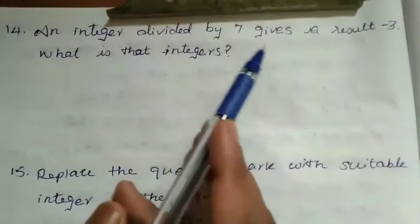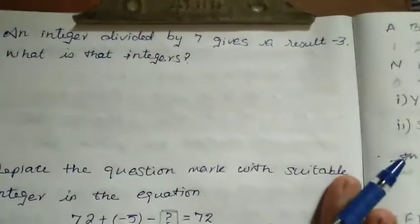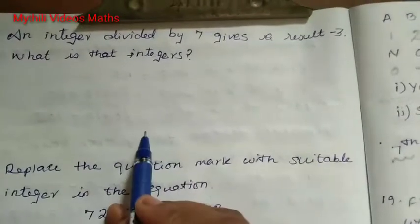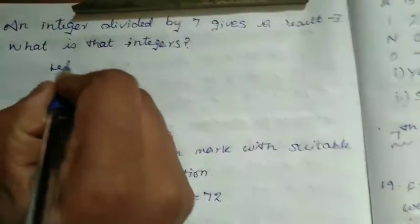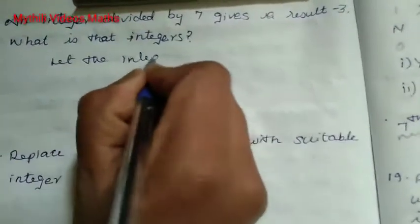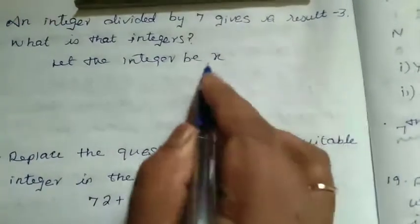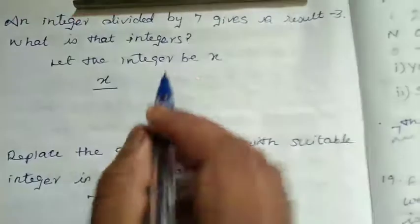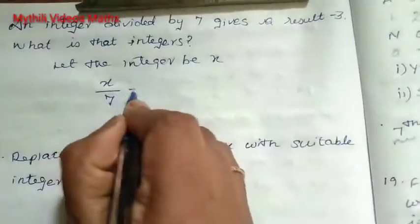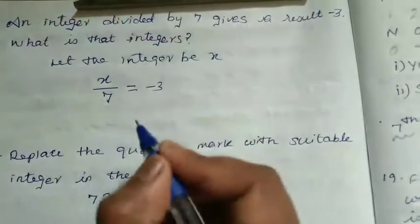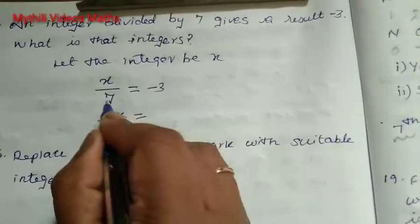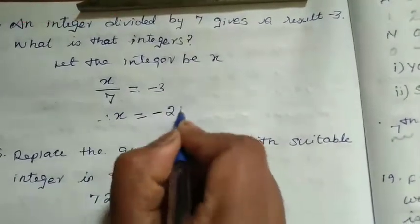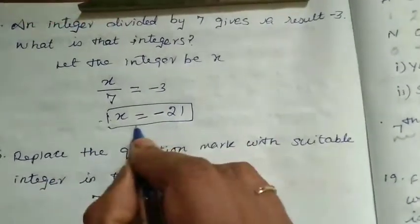14th sum: an integer divided by 7 gives a result of minus 3. What is the integer? Using cross multiplication, x equals plus into minus, so 3 sevens are 21, and the answer is minus 21. Therefore that integer is minus 21.